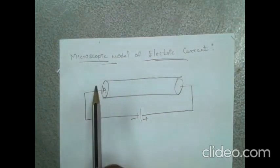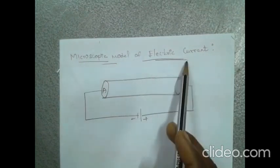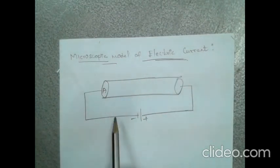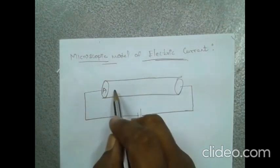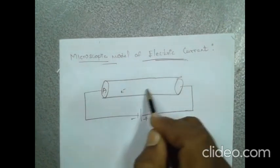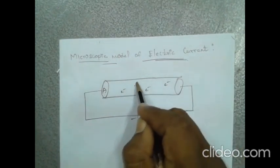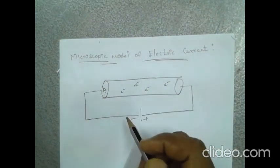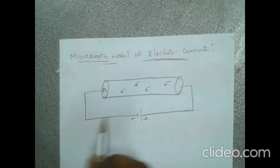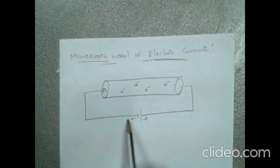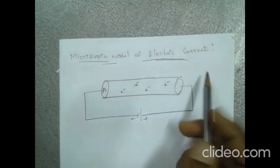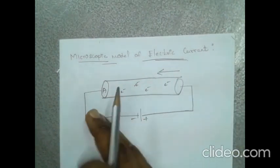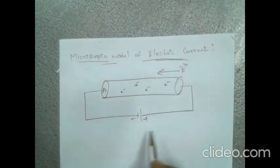Welcome to the topic of microscopic model of electric current. Consider a conductor which has an area of cross-section A. In the conductor, there are many free electrons. When we connect a battery, with the negative terminal and positive terminal joined, the electric field direction in the conductor goes from right to left.